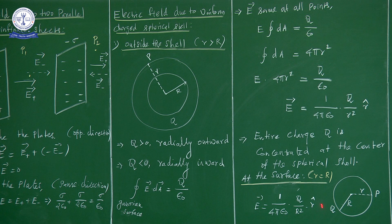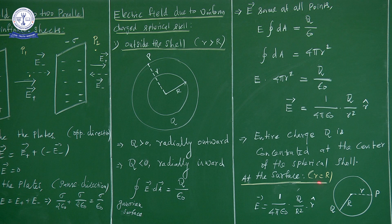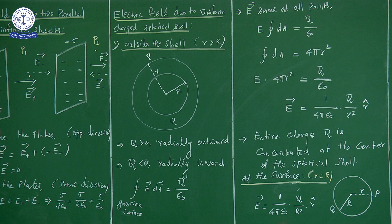The r-cap is used as a unit vector because the electric field is a vector quantity. Any scalar multiplied by a unit vector gives a vector. At the surface of the spherical shell where r equals R, the electric field is E vector equals 1 divided by 4 pi epsilon naught into Q by R squared into r-cap.